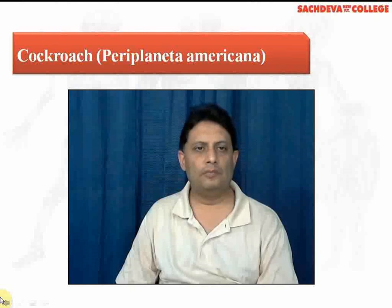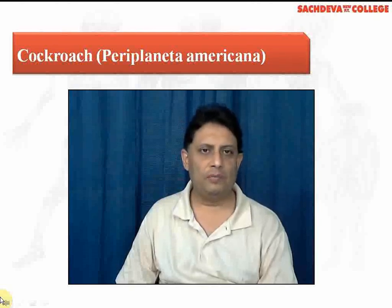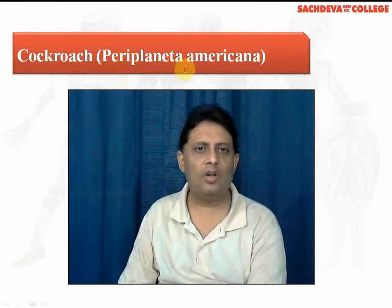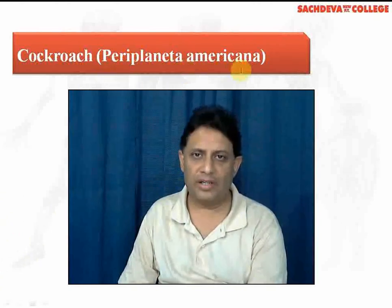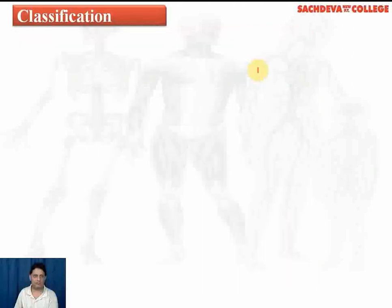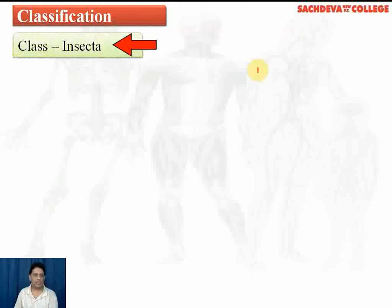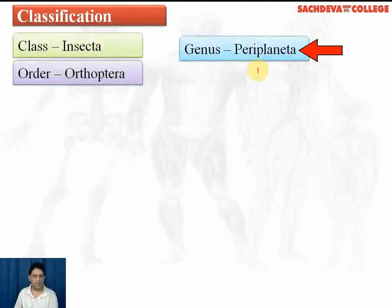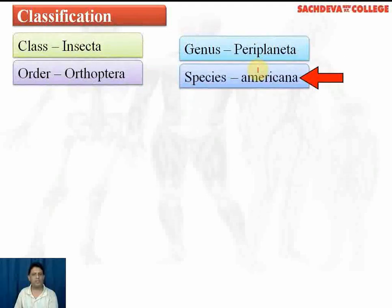Cockroach. The scientific name is Periplaneta americana — 'Periplaneta' because it is present all over the planet, and 'americana' as the name was given by an American scientist. Classification: it belongs to class Insecta, order Orthoptera, genus Periplaneta, and species americana.